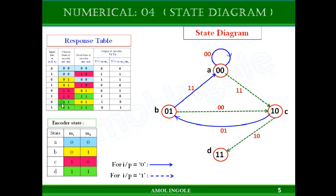Now the last state, which is 11. When you are in the 11 state and the input bit is 0, you will go to the 01 state. This is shown with a darker line along with the output 10.